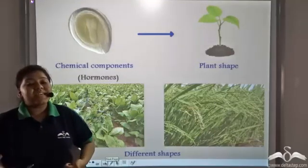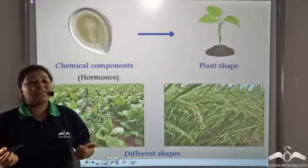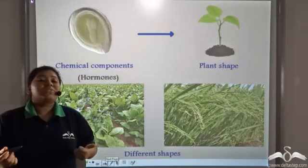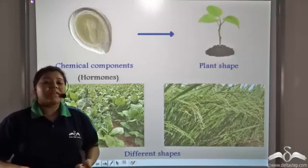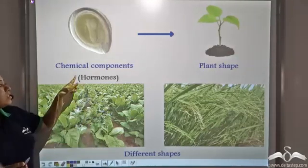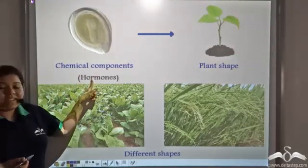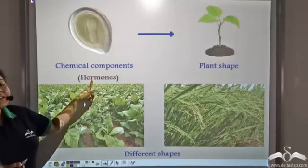How does the seed know in what plant or in what structure to develop? Well, there are special chemicals known as hormones present in the seed that determines the plant shape.